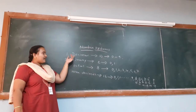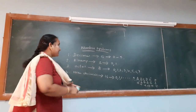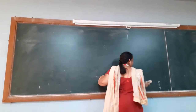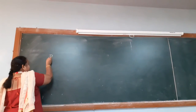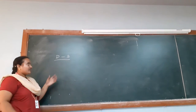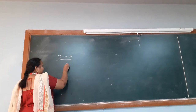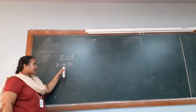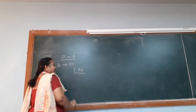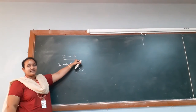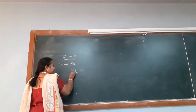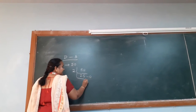Now I am going to explain about conversions from each number system. First, consider decimal to binary conversion. I am considering the decimal number 50. To convert 50 to binary, we divide this decimal number by the base of the binary number system, which is 2. So 2 times 25 is 50, with no remainder — remainder is 0.